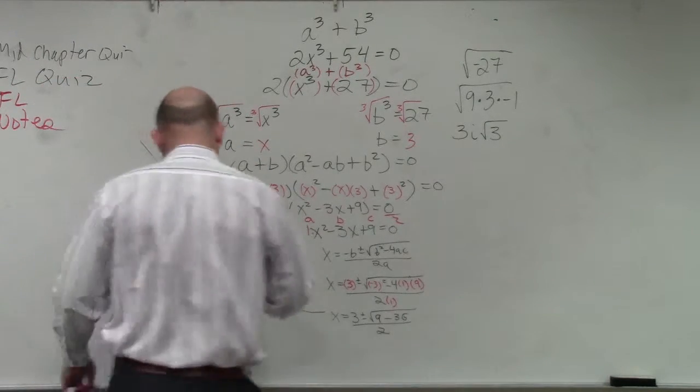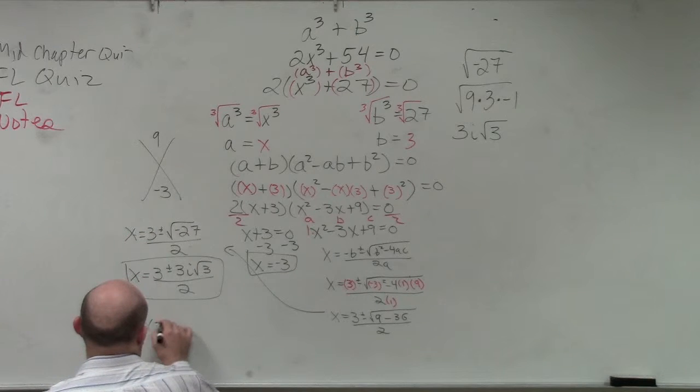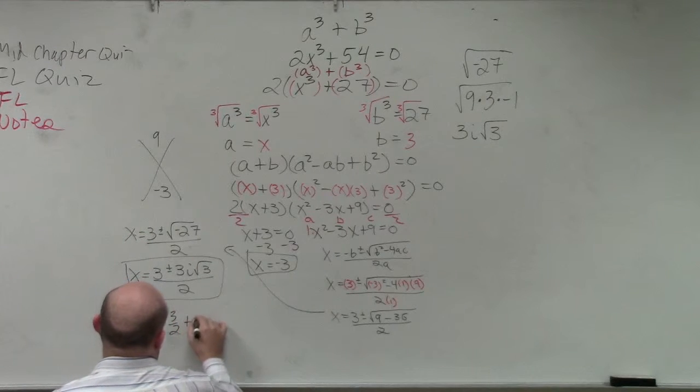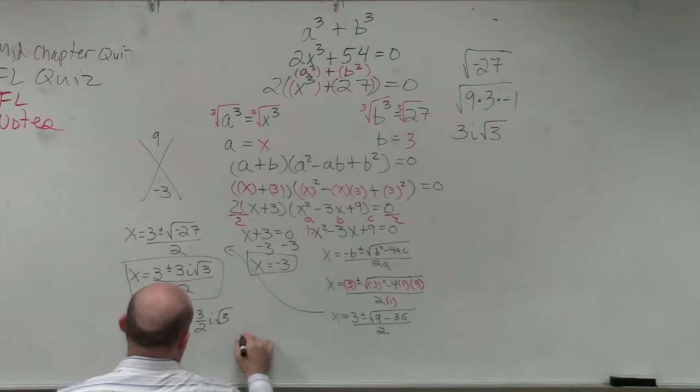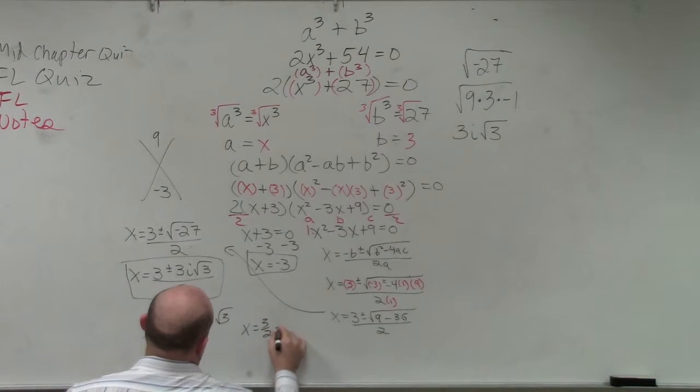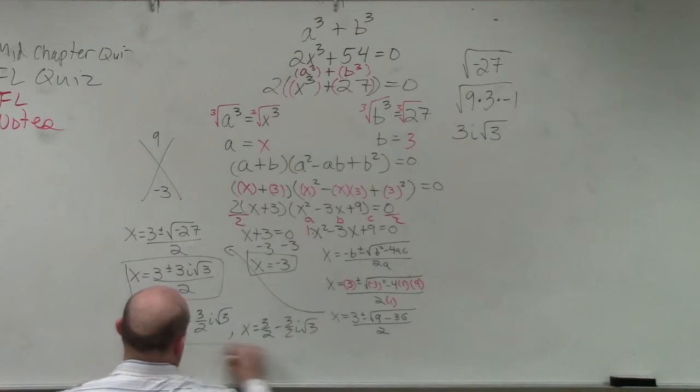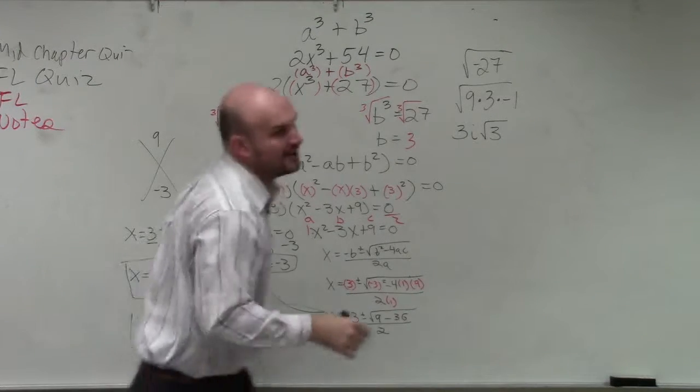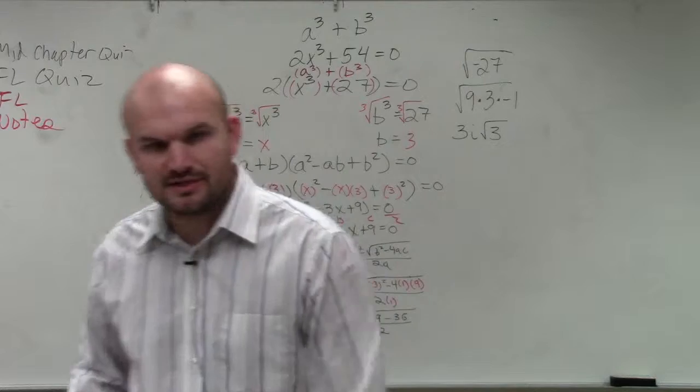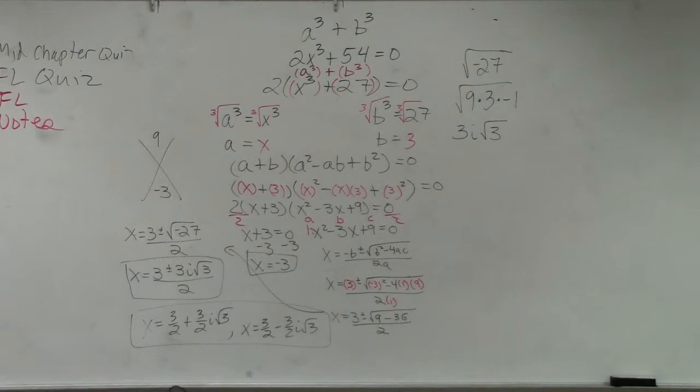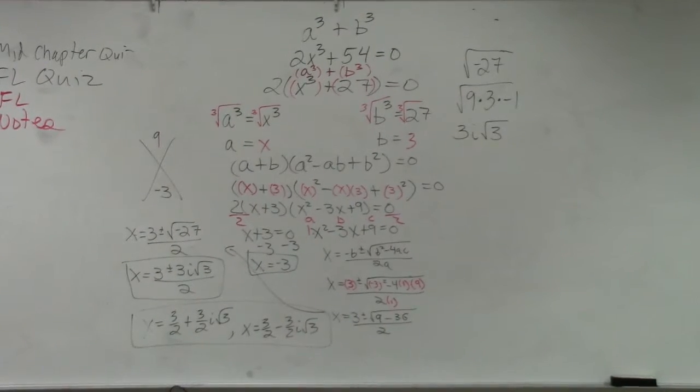And that's what you guys do. You could also write these out, just so you guys know. You could also write this as 3/2 plus 3/2 i√3, and x equals 3/2 minus 3/2 i√3. If you guys wanted to break those down, I don't know how you guys might see that on a test. But that's another way to write those. Does that make sense? I just spent 10 minutes.